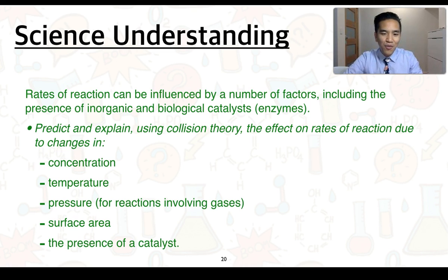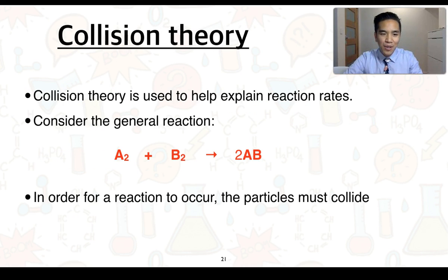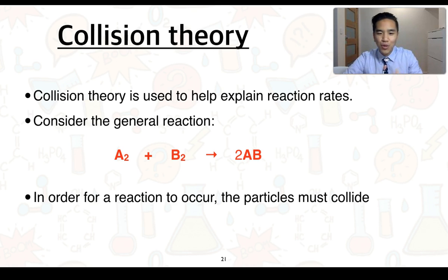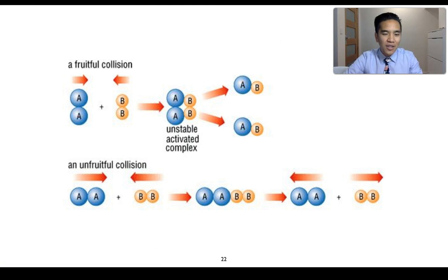We're going to start off with what we mean by collision theory - this is what we can use to help explain reaction rates. To do so, we're going to consider the general reaction of A2 reacting with B2 to produce two lots of AB. In order for this reaction to occur, we know that the particles must collide. This diagram shows you how the reactants may collide.